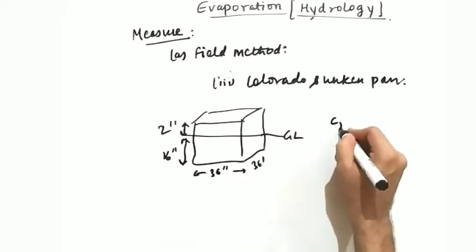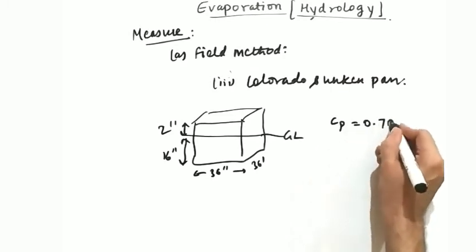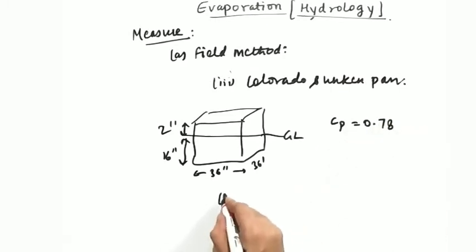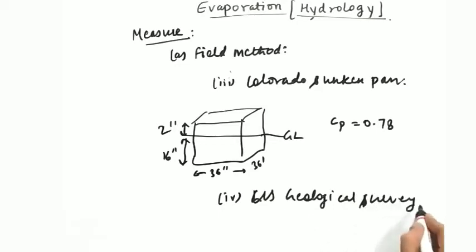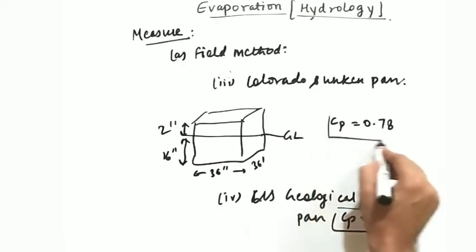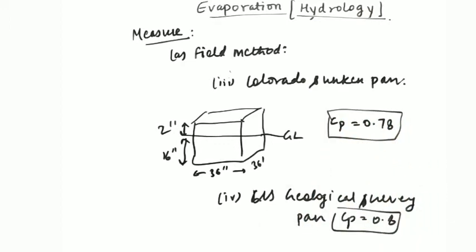The Cp is equal to 0.78. The last pan is called US Geological Survey pan. The Cp is equal to 0.8. So you must remember the Cp values for every pan. This is the objective.